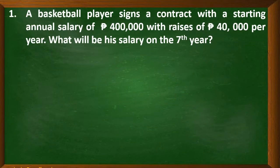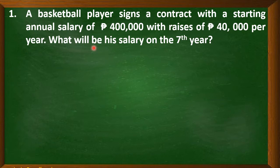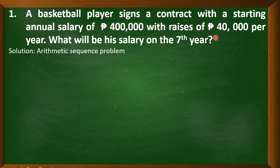Now let us consider the first problem. A basketball player signs a contract with a starting annual salary of 400,000 pesos with raises of 40,000 pesos per year. What will be his salary on the seventh year? The given problem is an example of arithmetic sequence.